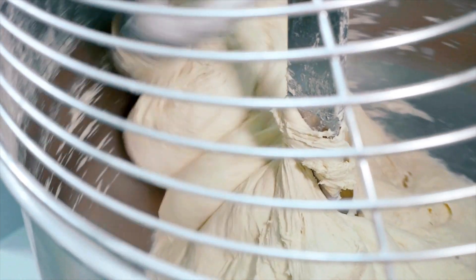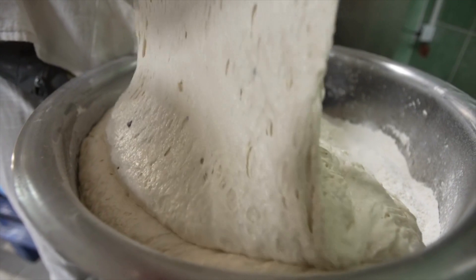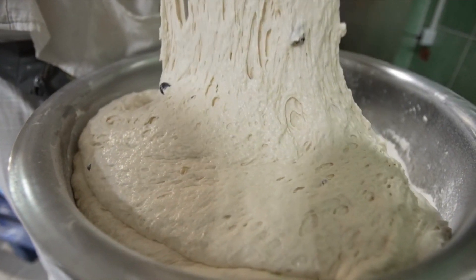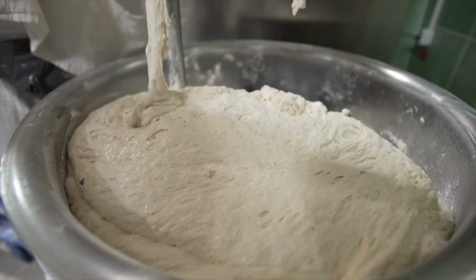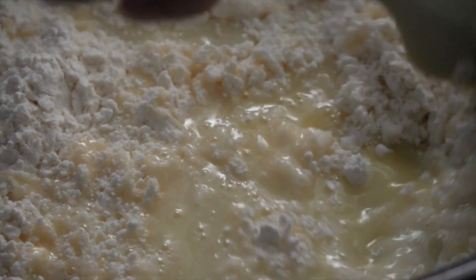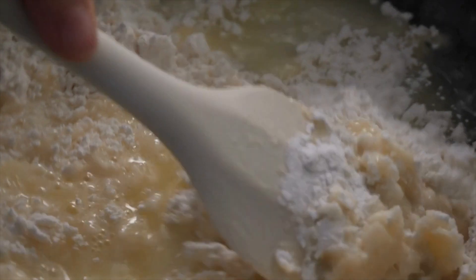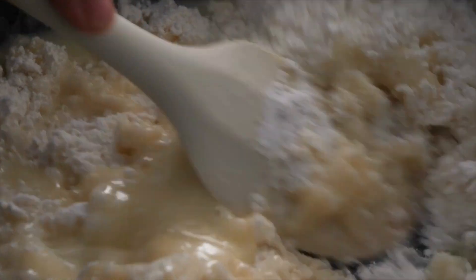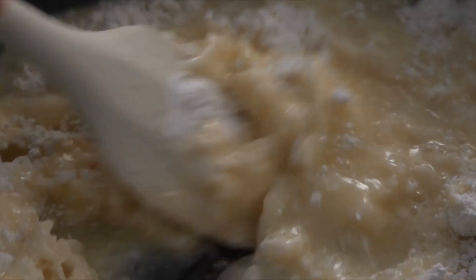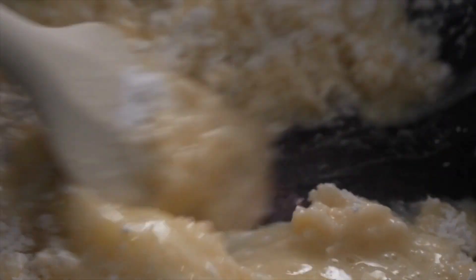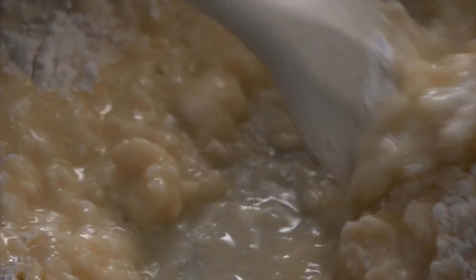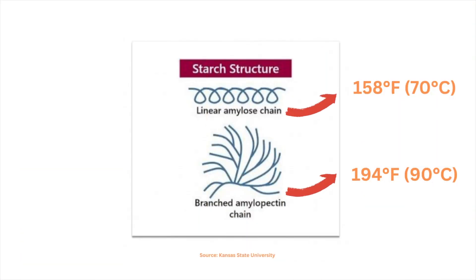Subsequent heating causes the granule size to increase until they can no longer absorb more water and burst. Rheologically, this is accompanied by maximum viscosity build-up, followed by a drop to a plateau as molecules making up the granule start to leach out from the swollen granules and disperse or solubilize in the aqueous medium, yielding a gel or paste whose properties depend on the concentration and type of starch in the slurry.